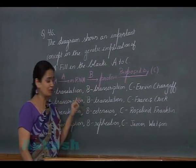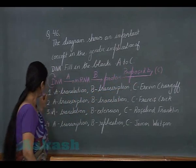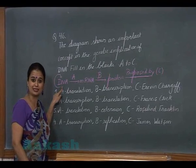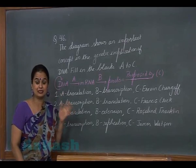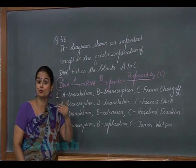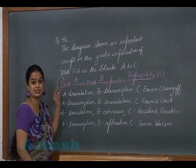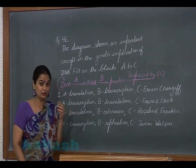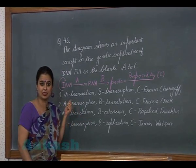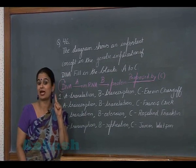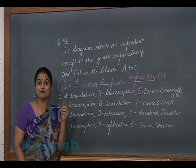In this flowchart we have to tell what A, B, and C are. DNA is autocatalytic as well as heterocatalytic in nature. Autocatalytic means DNA can form its own copies, so the process depicted here is DNA replication, through which more copies of DNA are generated.